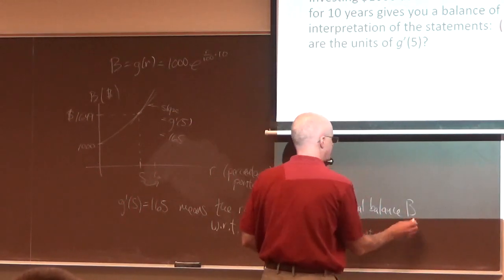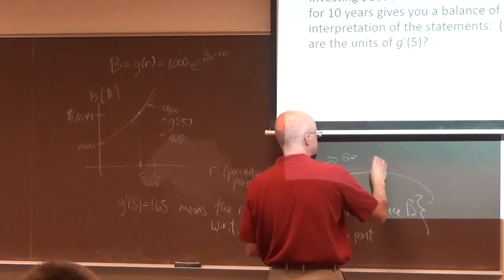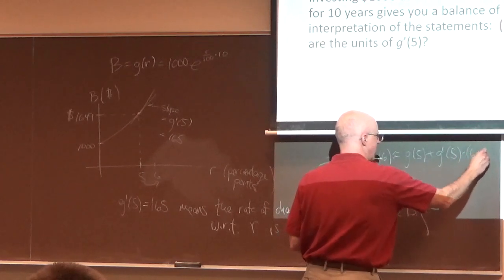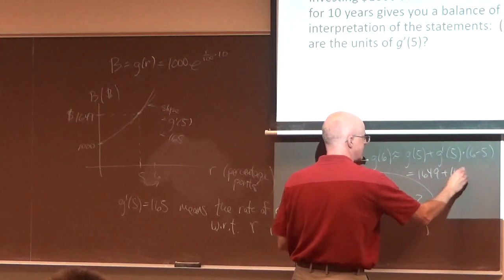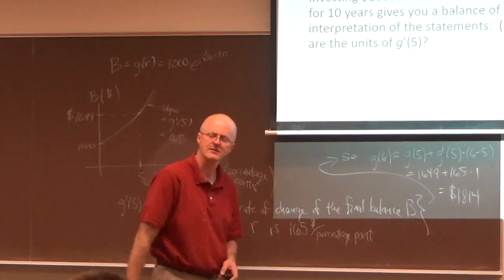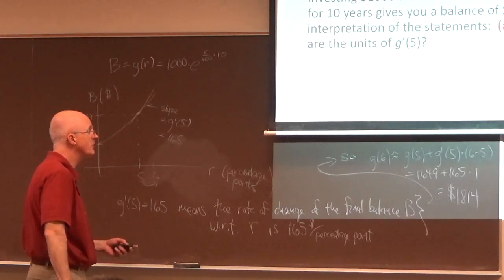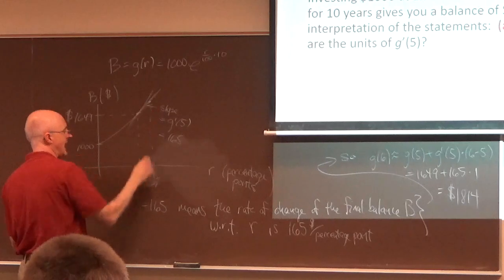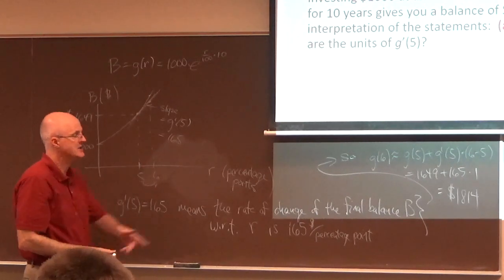Let's go ahead and write that down. G of 6 would be approximately G of 5 plus G prime of 5 times 1, which I can think of as 6 minus 5 because R improves from 5 to 6. This would be 1649 plus 165 times 1, $1,814. Is that approximation too big or too small? It's a tangent line approximation. Essentially I'm using this linear function to approximate the nonlinear function at 6. You can see the tangent line is below the graph of the function because the function is concave up. So its output is going to be too low. You're actually going to have a bit more than $1,814.